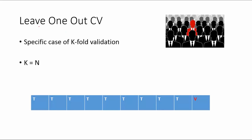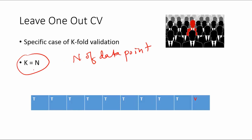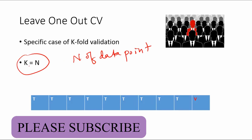The next one is the leave-one-out cross-validation. It is a special case of the k-fold cross-validation when k equals n, where n is nothing but the number of data points in your sample. So when the total number of splits is exactly equal to the number of data points in your sample, we call that the leave-one-out cross-validation technique.